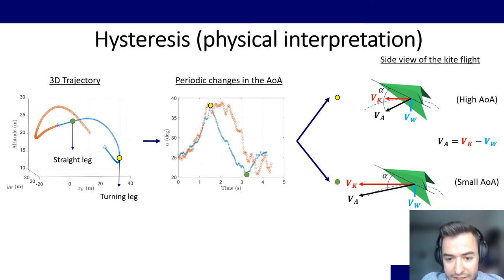We see that here the angle of attack is high. Here, since the velocity of the kite is bigger, the angle of attack is small. And this is what explains this periodic behavior of the angle of attack in a semi-figure of 8. And then these periodic changes in the angle of attack is what causes the dynamic stall in the kites.